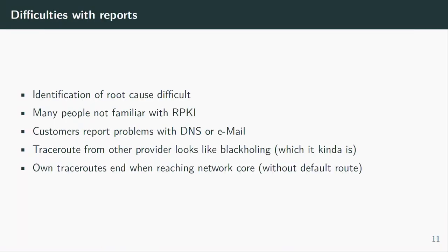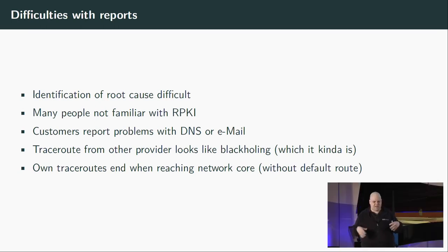But this was only the first impact, and I will tell you what happened in the year after that. As a summary, there were difficulties, because it turns out seeing that the problem you're having is RPKI-related is not very obvious to most people. Many people don't know what RPKI is or how it operates. If your customers report it, they're not going to say 'you dropped an RPKI-invalid prefix' — they say DNS isn't working, or I can't reach that mail server, or my API endpoint doesn't work anymore. So from the reports, it's not inherently clear that you caused it by dropping an RPKI-invalid prefix.